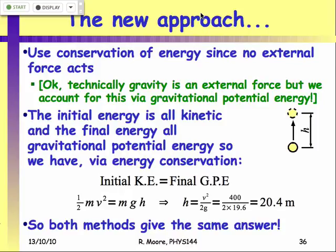In the case where we've got a ball being thrown up into the air, if we're ignoring air resistance, then the initial kinetic energy at the start of the trajectory must be equal to the final gravitational potential energy at the top of the trajectory where it's lost all its kinetic energy. So we put our kinetic energy, one-half mv squared, equal to the final gravitational potential energy and come up with a calculation for the height as v squared over 2g, which is exactly the formula we got from considering the vertical acceleration of the projectile.